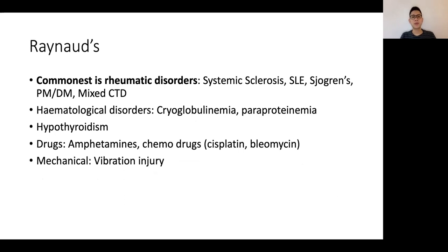Next, we talk about Raynaud's. There is a primary and secondary Raynaud's. In the PACES exam, we are usually looking at a secondary cause, and connective tissue disorders such as systemic sclerosis and systemic lupus erythematosus are probably the commonest causes. Other causes like Sjögren's, polymyositis, dermatomyositis, and mixed CTDs can also cause Raynaud's. Hematological disorders such as cryoglobulinemia secondary to hepatitis B, hepatitis C, and paraproteinemia like myeloma can also be causative. Hypothyroidism is an endocrinological cause, and rare causes include drugs, amphetamines, chemotherapy drugs, and vibrational injuries.